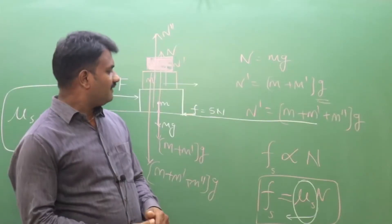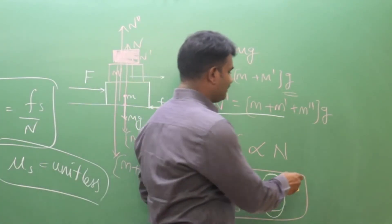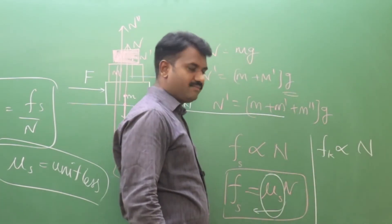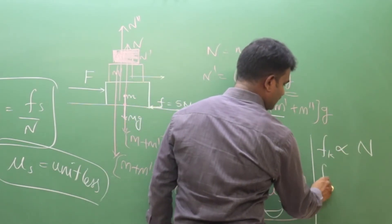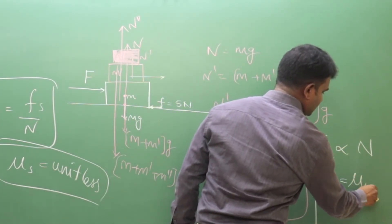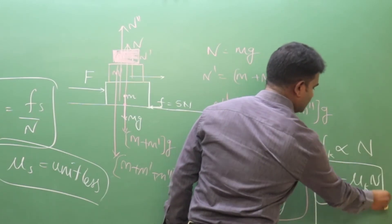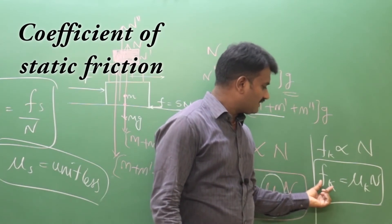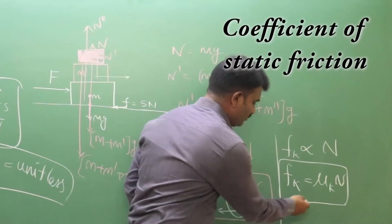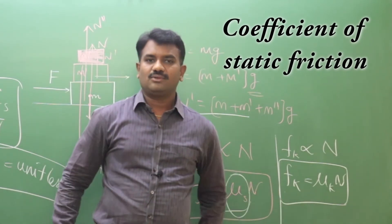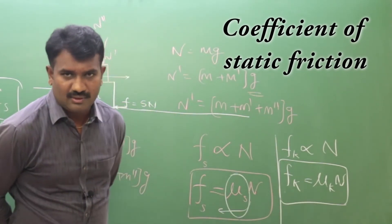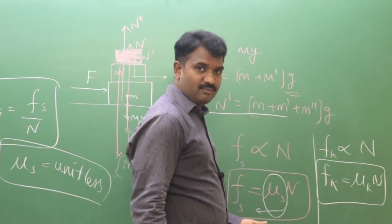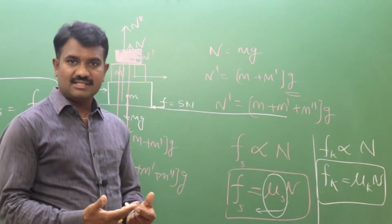Kinetic friction follows the same kind of laws. Kinetic friction fk is directly proportional to the normal reaction, so fk equals mu-k times N. Similarly, mu-k is also a ratio — the coefficient of kinetic friction equals fk divided by N — and it is also unitless. When compared to mu-s, mu-k is lesser, because kinetic friction is less than static friction.